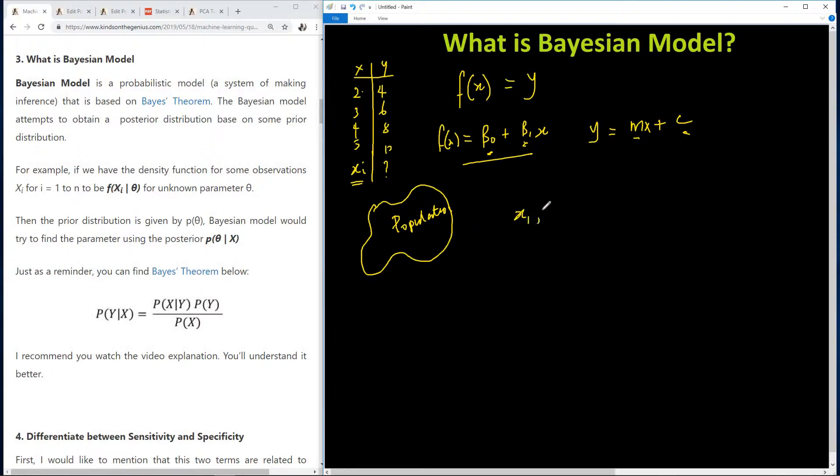Let's call it X1, X2, all the way to Xn. We take N samples. So if we take these N samples, based on this sample, we now estimate some parameter of this population. So let's call that parameter theta. So now Bayesian model tries to predict theta based on Bayes' theorem.